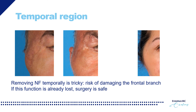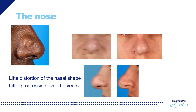The temporal region carries more risk — specifically the risk of cutting the frontal branch of the facial nerve — which must be taken into account when deciding whether to perform this surgery. The nose appears to be more resilient to neurofibromatosis, often showing little distortion of nasal shape and little progression over the years, so we are generally reluctant to perform early corrections of the nose.